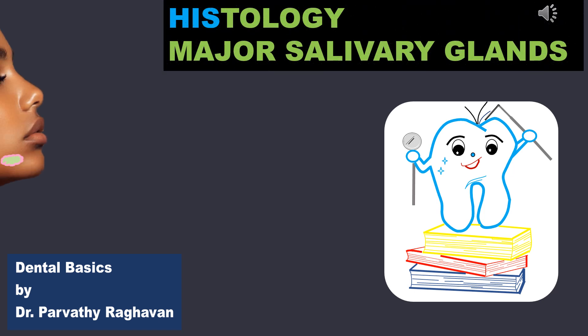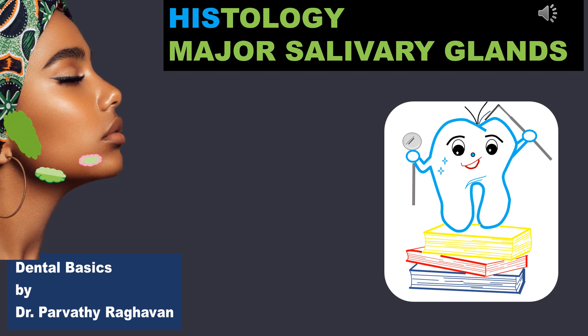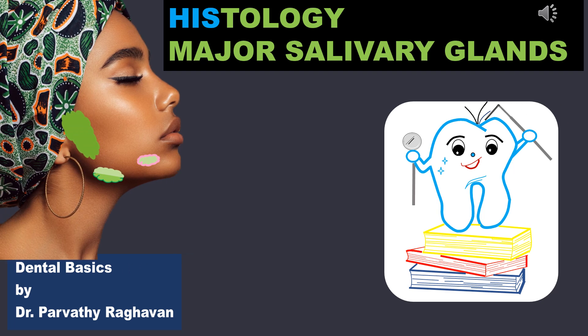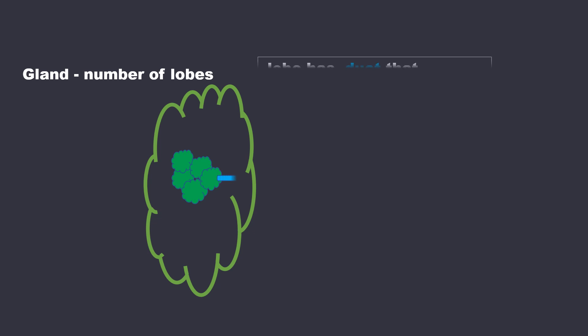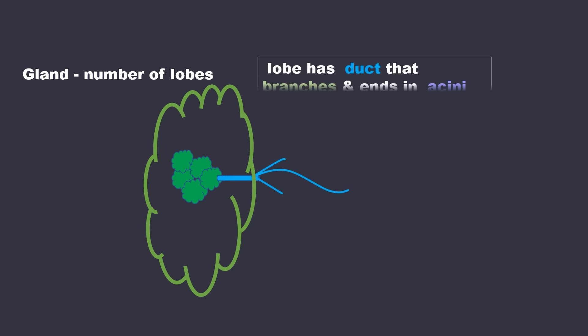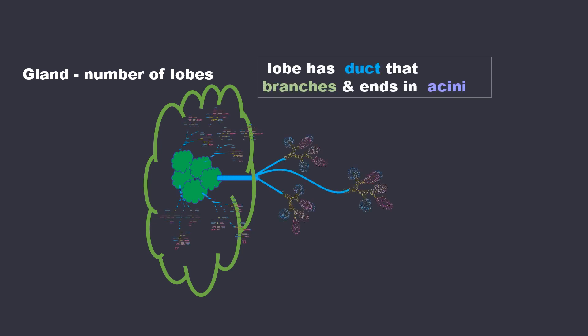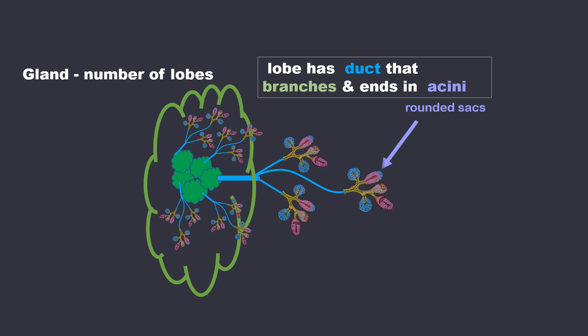Histology of major salivary glands. Salivary glands make, modify and secrete saliva into our oral cavity. Each major salivary gland is made of a number of lobes or divisions. Each lobe has a duct that branches and ends in an acini. Acini are rounded sacs. In these sacs, saliva is produced, moved into small ducts which moves into a main duct that finally drains into our mouth.